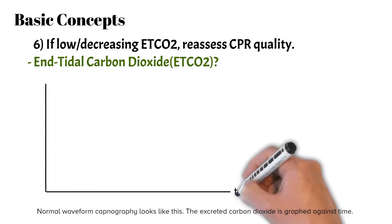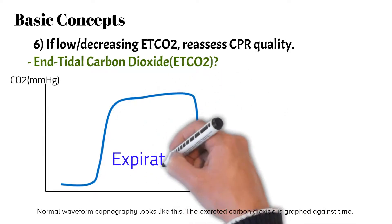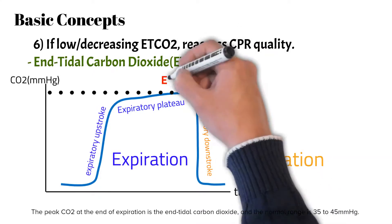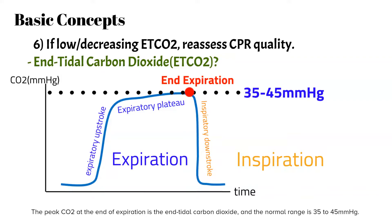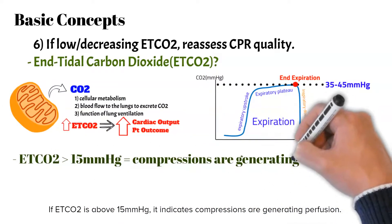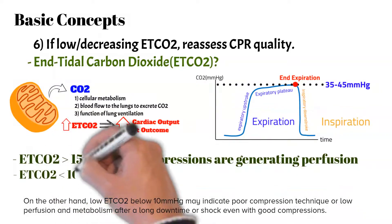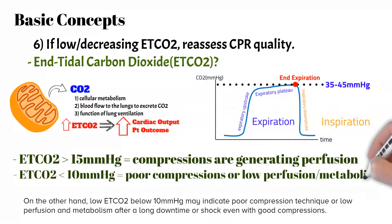Normal waveform capnography looks like this — the excreted carbon dioxide is graphed against time. The peak CO2 at the end of expiration is the end-tidal carbon dioxide, and the normal range is 35 to 45 mmHg. If end-tidal carbon dioxide is above 15 mmHg, it indicates compressions are generating perfusion. On the other hand, low end-tidal carbon dioxide below 10 mmHg may indicate poor compression technique, or low perfusion and metabolism after a long downtime or shock, even with good compressions.